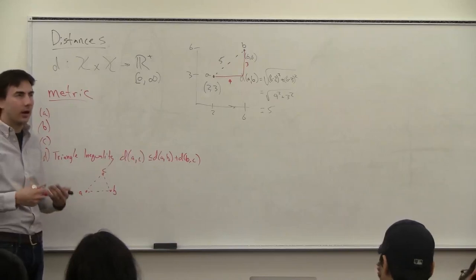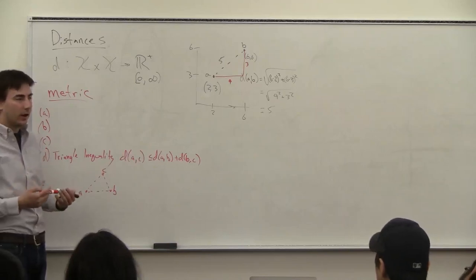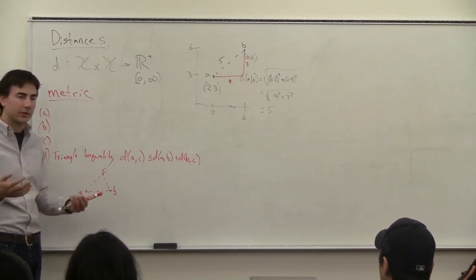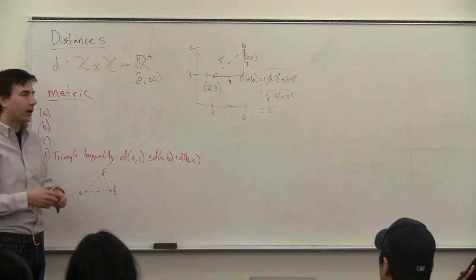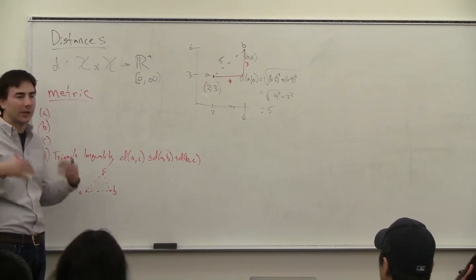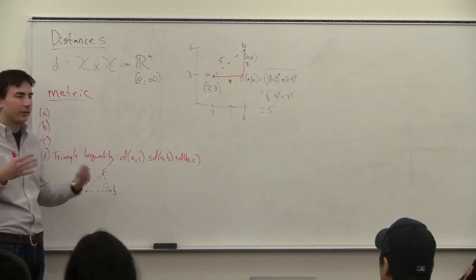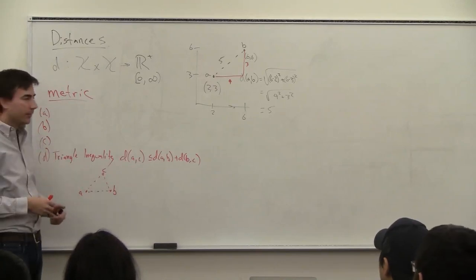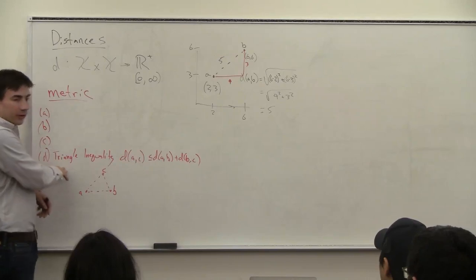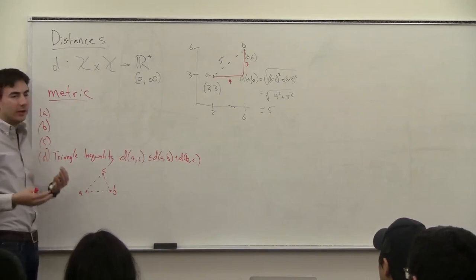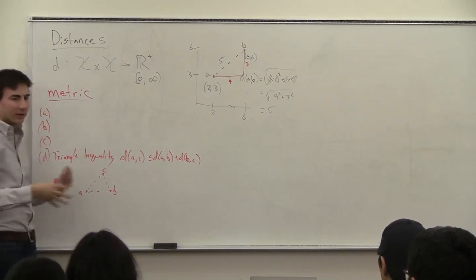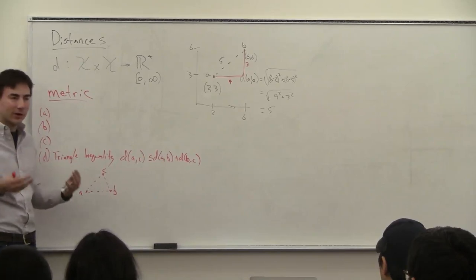Bregman divergences capture a lot of statistical properties and work better in the space of distributions — they make more sense from a statistical standpoint. They do something like measure the difference in the entropy of the systems. But they don't satisfy the triangle inequality. This is not necessary for a distance, but it's a very intuitive property to have, and it'll make a lot of the techniques we use work. If you don't have this, all sorts of weird things start to happen.